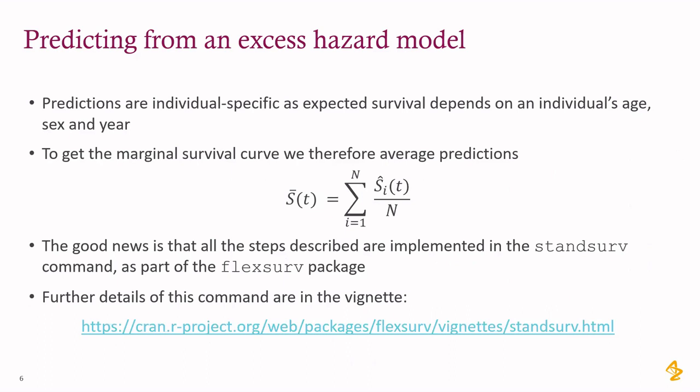What we end up with are individual-specific predictions, because often there's covariance in the life table — they're going to depend on an individual's age, sex, and year. The next and final step is to marginalize or average these predictions so we end up with marginal survival curves. All this is really implemented using StanServ — that's what it's there for: to get standardized, average survival curves. There's a vignette on the CRAN website in the FlexServ package for anyone interested in reading more about StanServ.